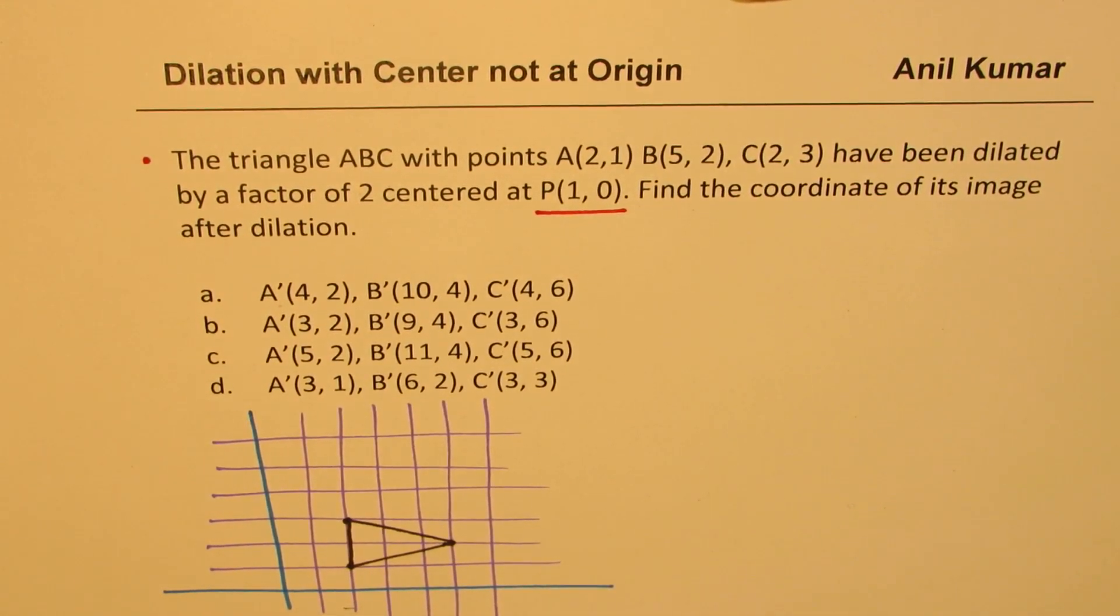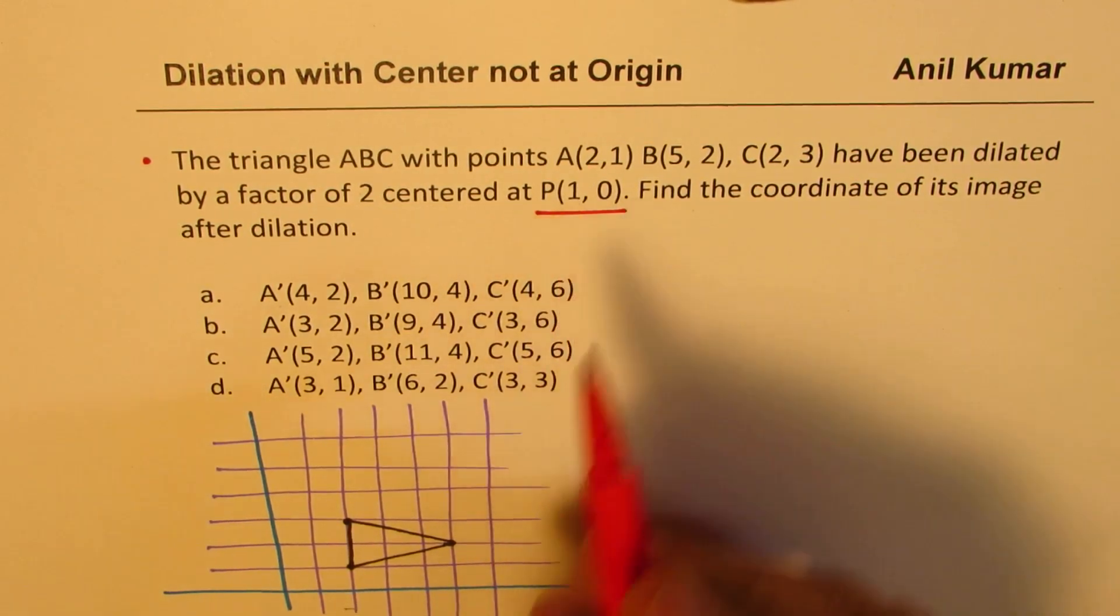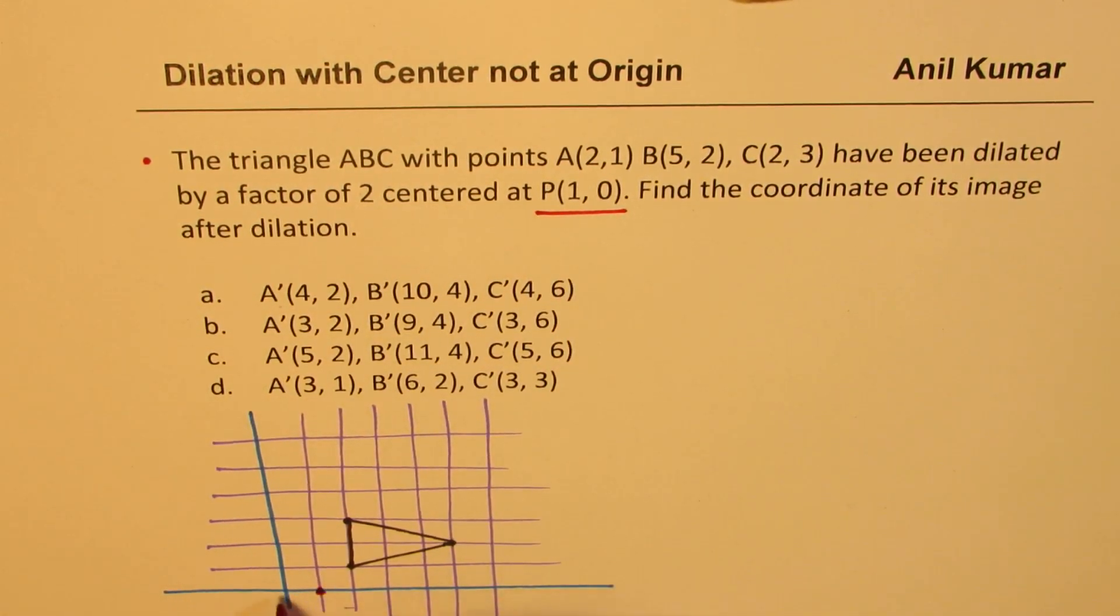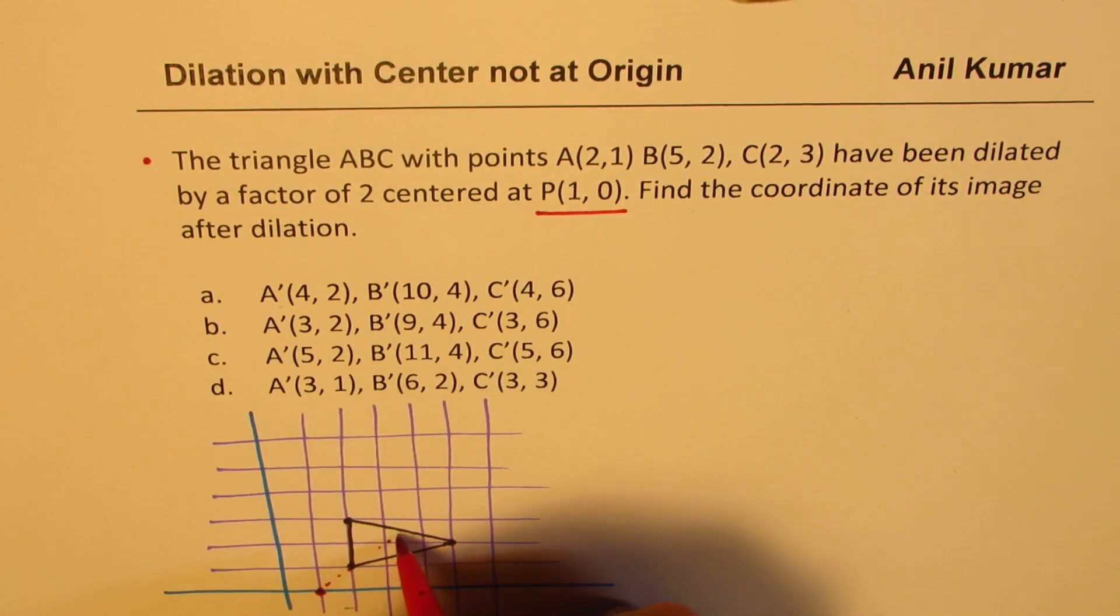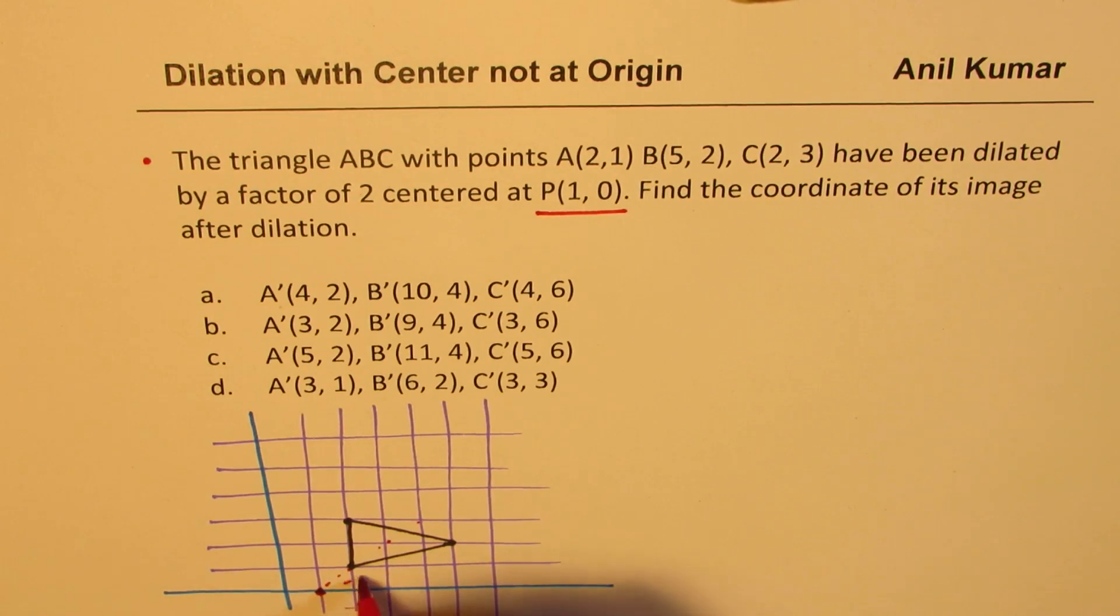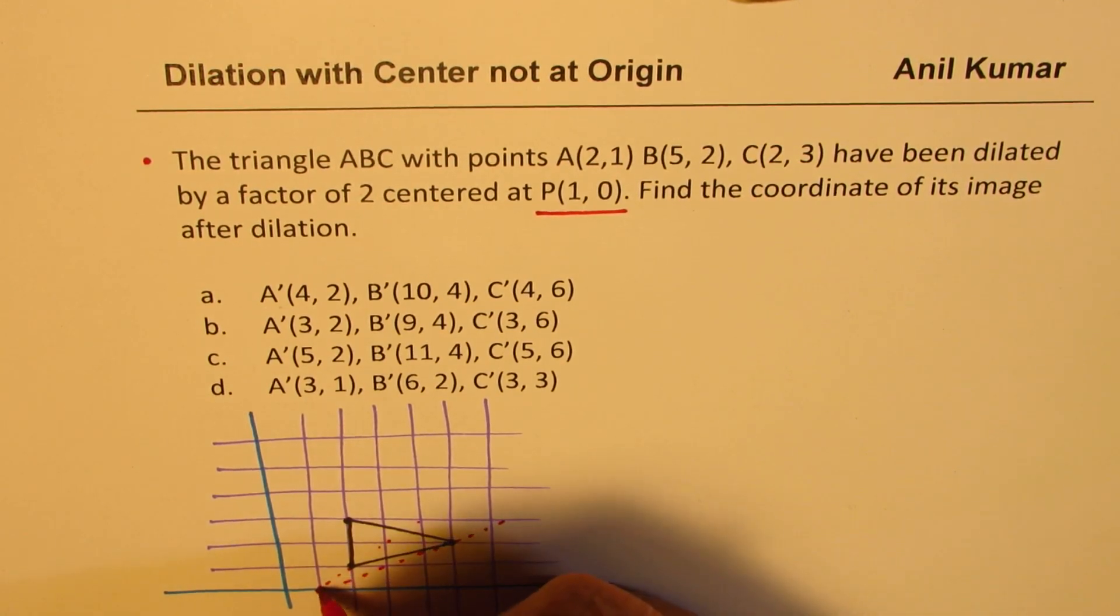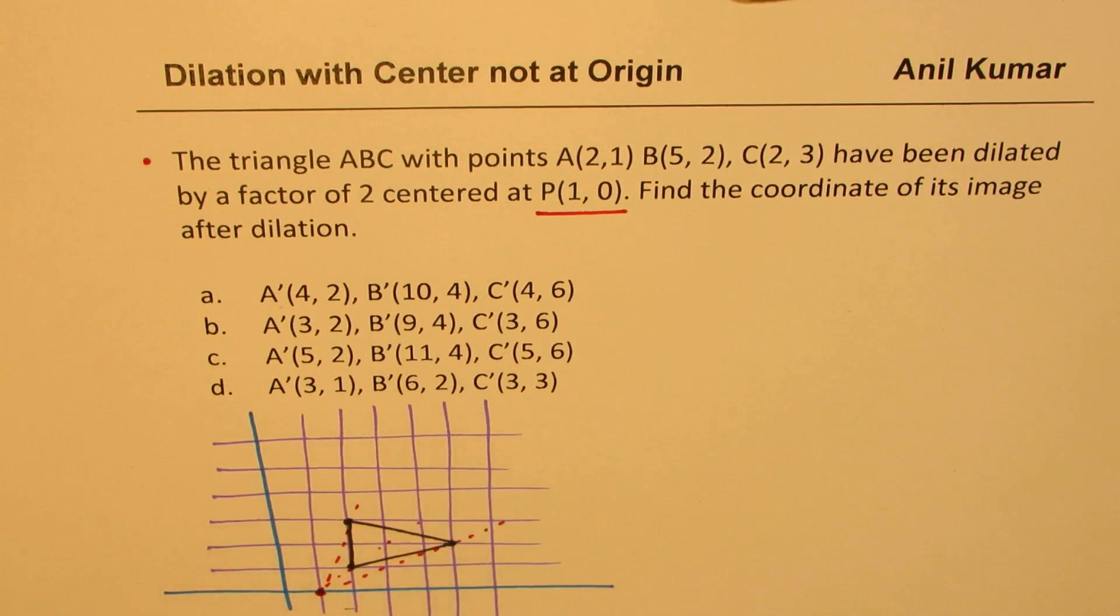Now we are looking for a dilation by a factor of 2 centered at P which is (1,0), which is actually here, not at the origin. So if you draw these lines you could actually on a graph paper get your solution. You could get your solution.